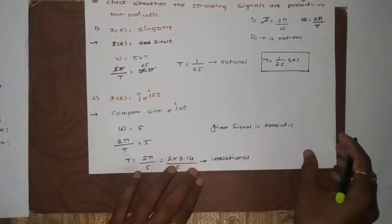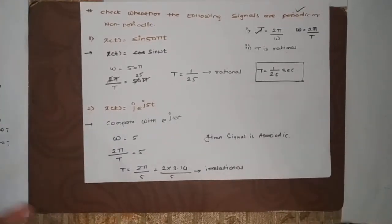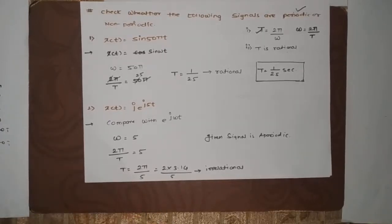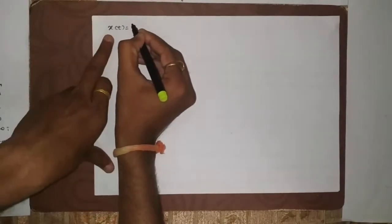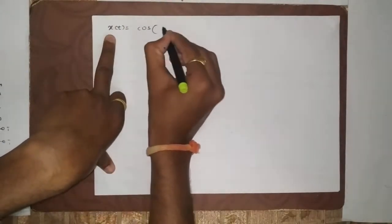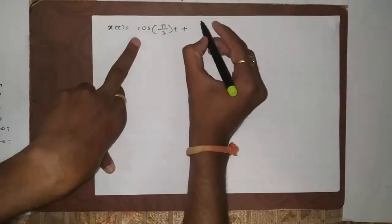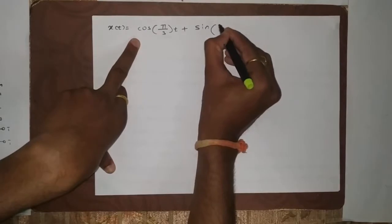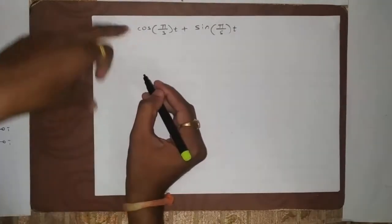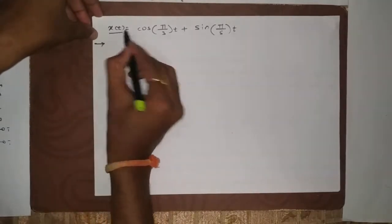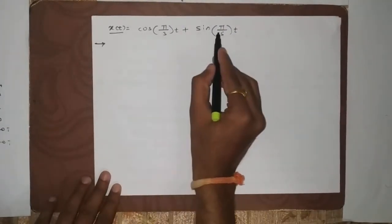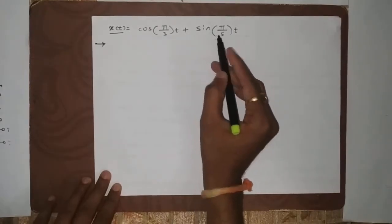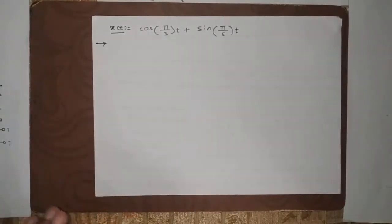Questions can be asked with signals in exponential, sine, cosine, or similar forms. Now let us assume a signal given as the addition of two different frequency components: x of t equals cos(π/3 · t) plus sin(π/5 · t). To determine whether x of t is periodic, we must find the individual time periods T1 and T2 of the cosine and sine terms, and then decide whether the combined signal is periodic.